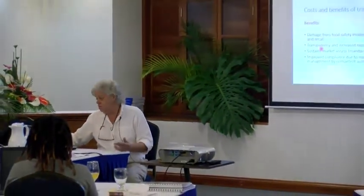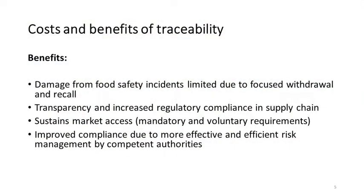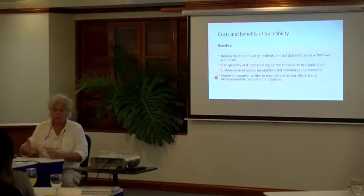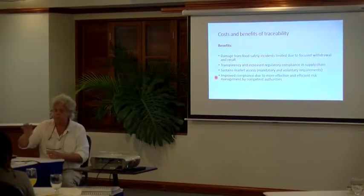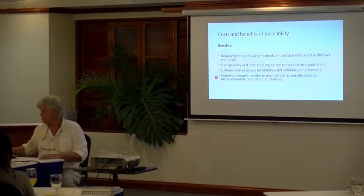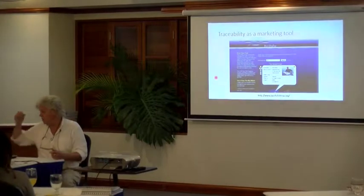Other benefits include better transparency and increased regulatory compliance, because failures in the supply chain can be identified and efforts focused on those areas. Traceability also sustains market access — many international buyers require traceability for sanitary and IUU certification, and you don't get into the market without it. Improved compliance also comes through better risk management, allowing non-compliances to be traced to specific supply chain operators.